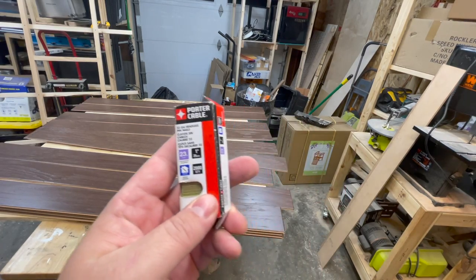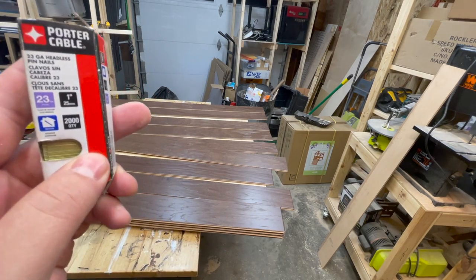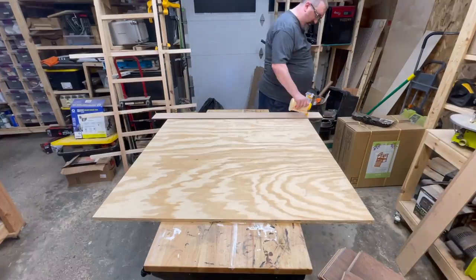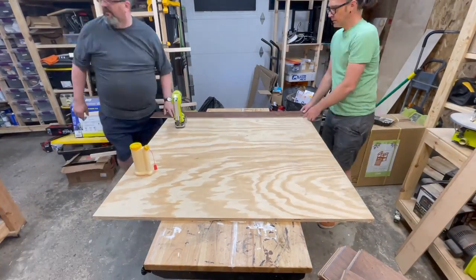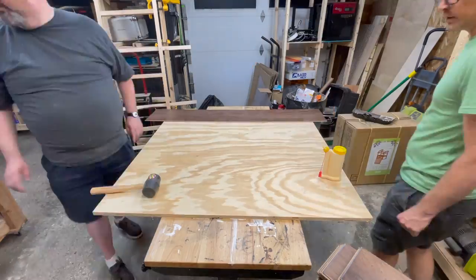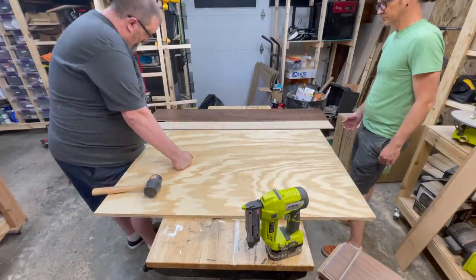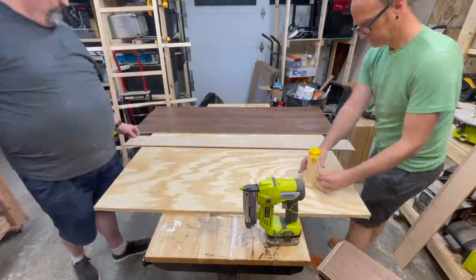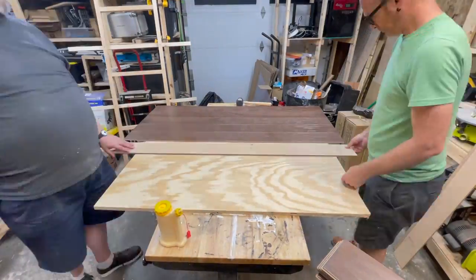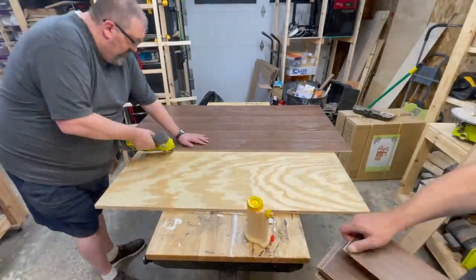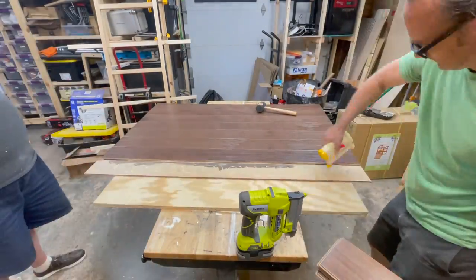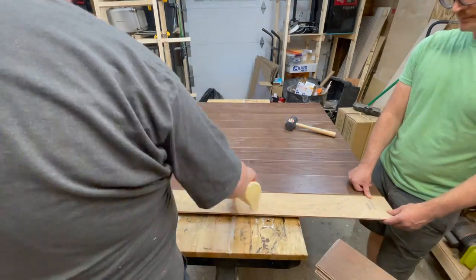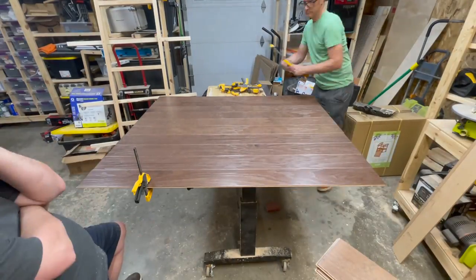We're going to fasten these planks down with some 23 gauge pin nails. We apply glue and then use the air nailer with the pin nails to fasten that down and click everything together. Once you get the angle figured out, the pin nails pretty much disappear into the flooring and it all clicks together great.